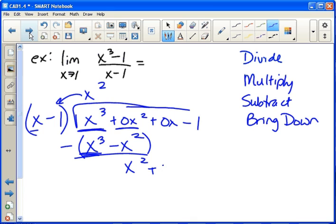The last step is then to bring it down. And we're just going to repeat those same four steps every time. So we divide. x squared divided by x, that's x. Now we multiply. x times x minus one. x squared minus x. We subtract.